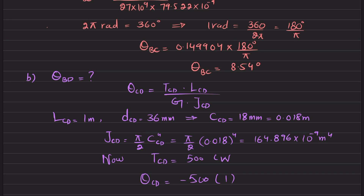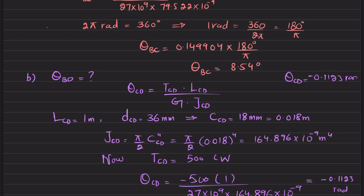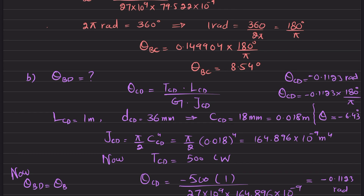So theta_CD equals torque (-500) times length (1 m) divided by G (27 × 10^9) times J_CD (164.896 × 10^-9), giving -0.1123 radians. Converting to degrees: -0.1123 times (180/pi) gives theta_CD = -6.43 degrees.